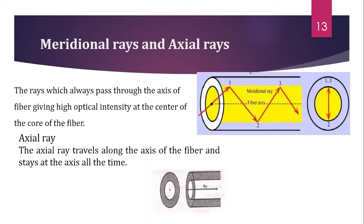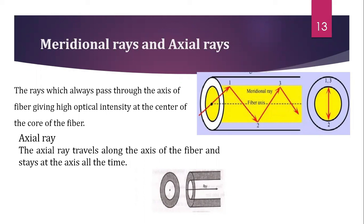Next are meridional rays. Meridional rays are rays which pass through the fiber axis. The diagram shows the meridional ray path view along the fiber axis and the ray path view along the plane normal to the fiber axis. The rays enter through the axis of the fiber and cross the fiber axis at each reflection. Light rays propagate inside the optical fiber via total internal reflection, with reflections noted at positions 1, 2, and 3.